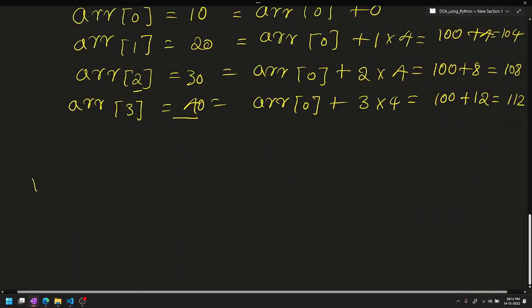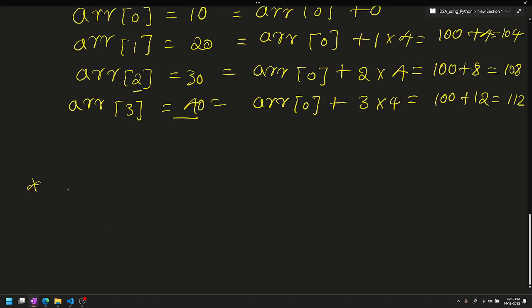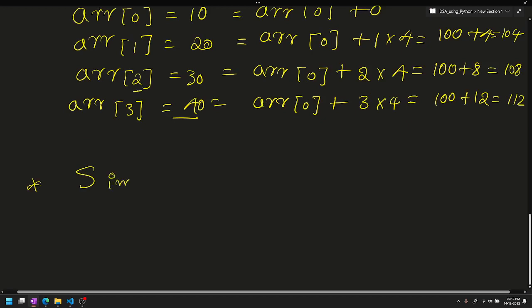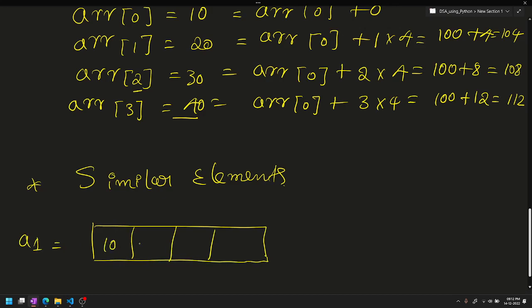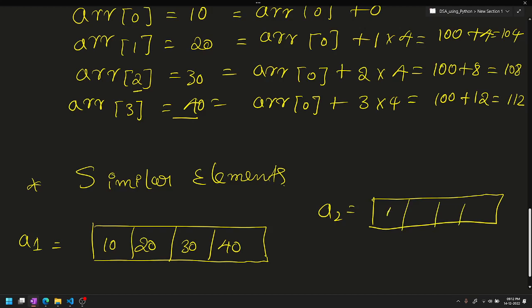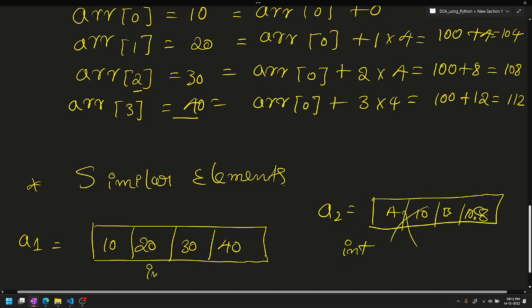The last key point is homogeneous elements — we can store only similar elements. We can store integer data types or character data types, but not a mix. For example, if you declare an integer array, you can only store integers. You cannot store both integers and strings together. The array must store the same data type throughout — that is the rule.